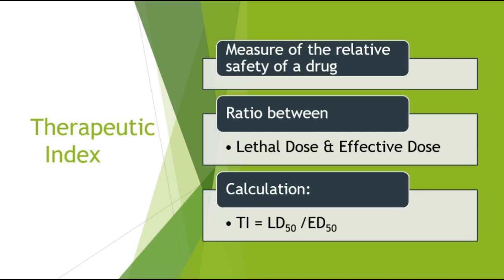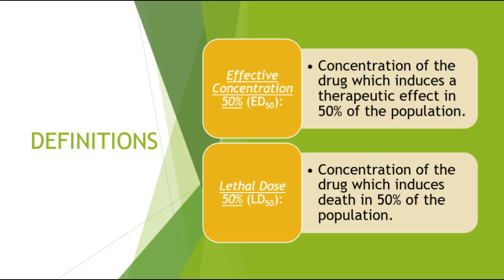The therapeutic index (TI) is a measure of the relative safety of a drug — a ratio between the lethal dose and the effective dose. TI equals the lethal dose in 50 percent of the population (LD50) divided by the effective dose in 50 percent of the population (ED50). ED50 is the concentration that induces a therapeutic effect in 50 percent of the population, while LD50 is the concentration at which death occurs in 50 percent of the population.